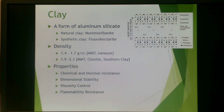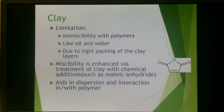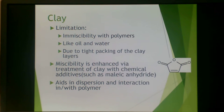For montmorillonite there is a lower density, and for things like Cloisite or Southern Clay they have a slightly higher density. These give good chemical and thermal resistance, much like mica because they're inorganic. They also provide good dimensional stability, good viscosity control in the resulting compound, and good flammability resistance. However, clay tends to be very immiscible with polymer — much like oil and water — due to the very tight packing of the clay layers. You can enhance this miscibility by treating the clay with a chemical additive that separates those layers, which also aids in dispersion and interaction with the polymer.